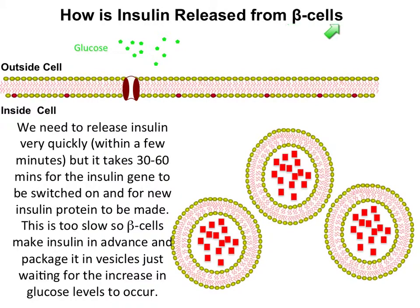What happens is that these beta cells go ahead of themselves and make insulin in advance, keeping it packaged up in little things called vesicles — thinking back to endocytosis and exocytosis, where these double-layered membrane vesicles will travel up and release their contents. The good thing about this is that these little red squares, representing insulin, are pre-packaged and just waiting for blood glucose to increase so they can be released, making this a much more efficient and effective response.